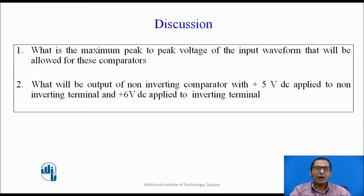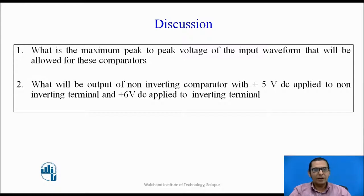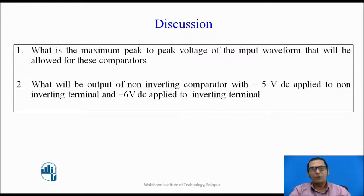At the end of the session, I would like to put two discussion questions. First: what is the maximum peak-to-peak voltage of the input waveform allowed for these comparators? We have one fixed V reference and a sinusoidal varying voltage — what is the limit of voltages that can be applied to the op-amp input? Second: what will be the output of the non-inverting comparator if I apply plus 5V DC to the non-inverting terminal and plus 6V DC to the inverting terminal? Instead of one DC and one sinusoidal signal, what happens if both inputs are DC? I keep these questions open for discussion.